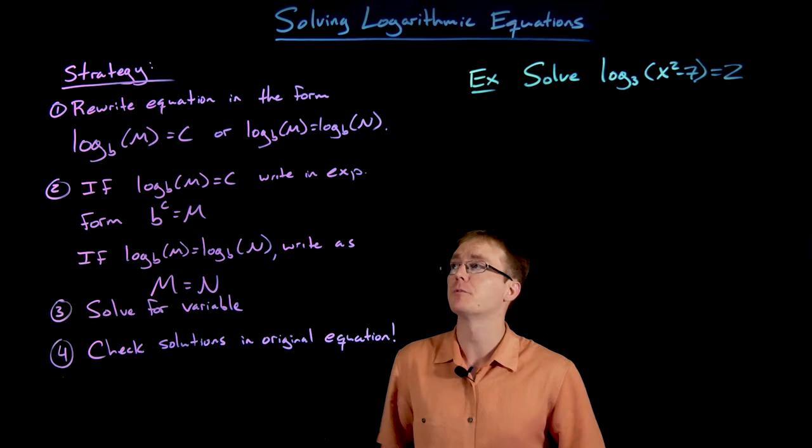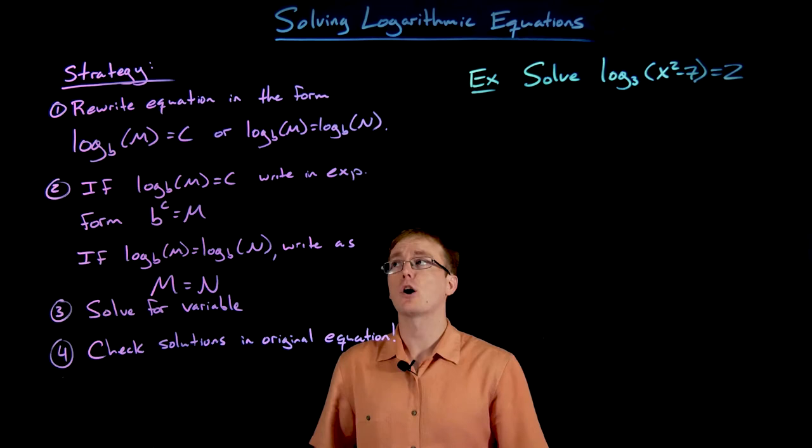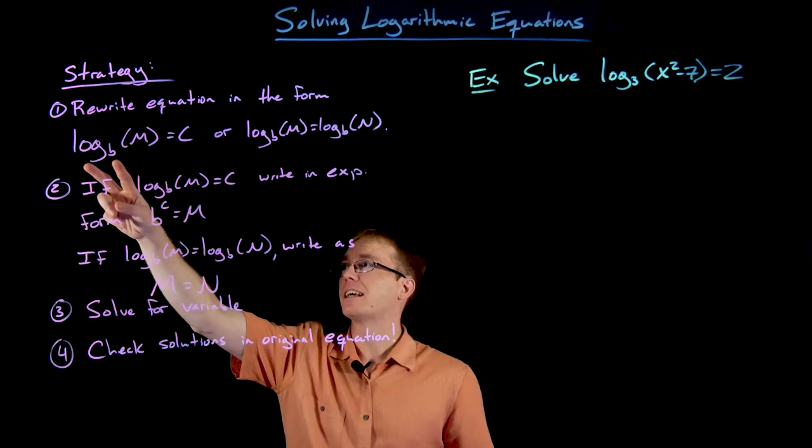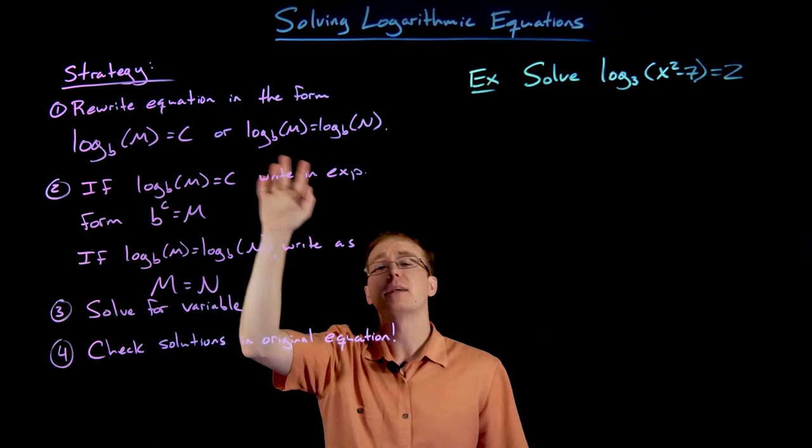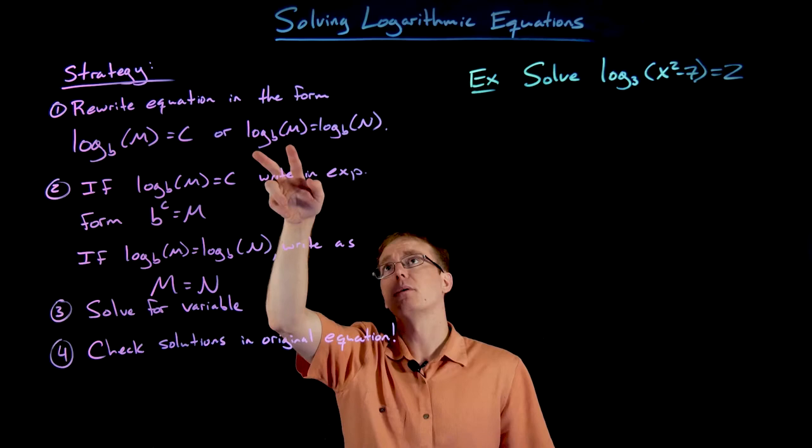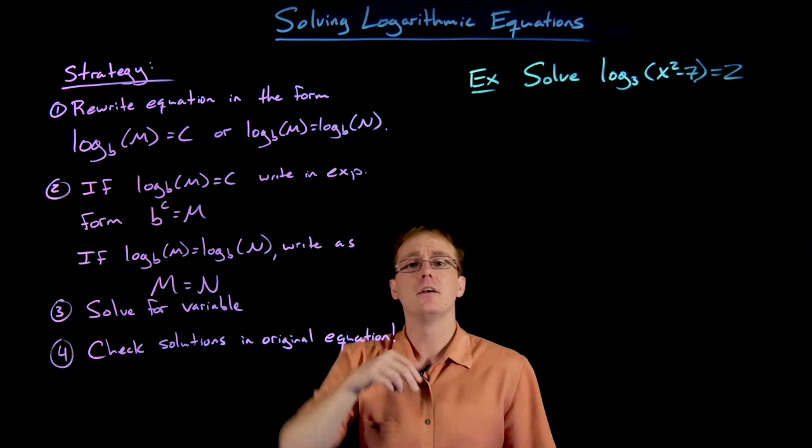The first part of our strategy is we're going to attempt to rewrite our logarithmic equation in one of two forms. We're going to try to isolate the logarithm and write it as log base b of m is equal to some single constant number c. Or if we can't isolate it down to a single logarithm, we'll try to get it into one logarithm equal to another logarithm, where the inputs m and n will probably be some expressions involving our variables.